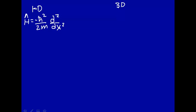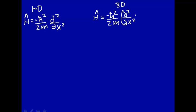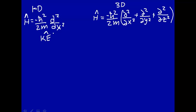Now when we go to the 3D case, we have not one dimension but three. So if we extend the Hamiltonian to three dimensions, it's minus h-bar squared over 2m, but now we have to take partial derivatives because we have three variables: the second partial derivative with respect to x, plus y, plus z. This is the kinetic energy operator in three dimensions.